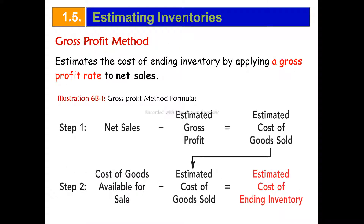The gross profit method estimates the cost of inventory by applying the gross profit rate to net sales. The gross profit rate is used to estimate: net sales minus estimated gross profit equals estimated cost of goods sold.